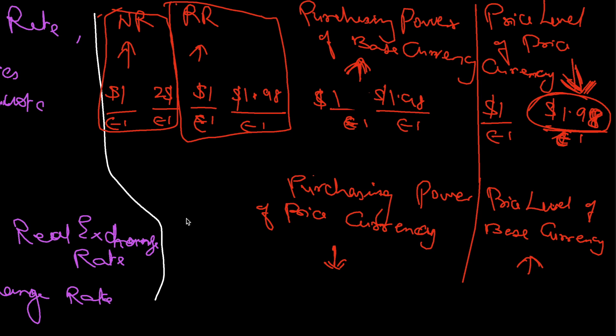Similarly, if the nominal rate had gone down, the real exchange rate would have gone down, the purchasing power of the base currency would have gone down, the price level of the price currency would have gone up, the purchasing power of the price currency would have gone up, and the price level of the base currency would have gone down — just the vice versa. Thank you.